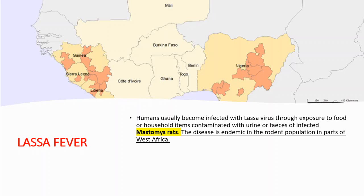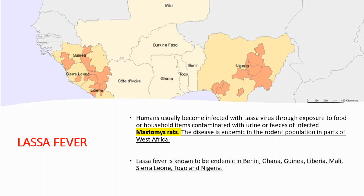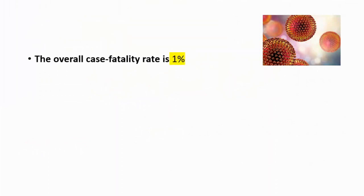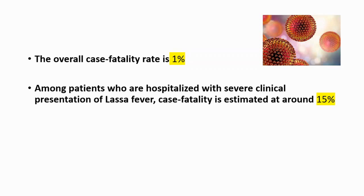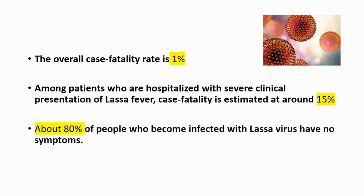Humans usually become infected with Lassa virus through exposure to food or household items contaminated with urine or feces of infected rats. The overall case fatality rate is 1% for Lassa fever, and among patients who are hospitalized with severe clinical presentation, case fatality is estimated around 15%. But about 80% of people who become infected with Lassa virus have no symptoms.